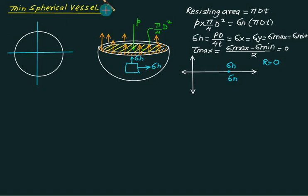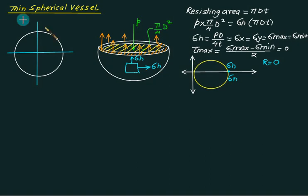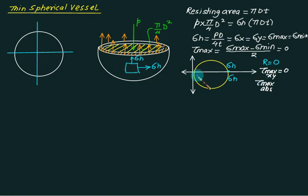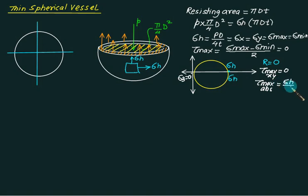If we draw the three Mohr's circles, one Mohr's circle is already drawn and the other two will overlap. The radius equals τ_max, so τ_max(x,y) = 0. But τ_max absolute equals this value minus this value, which gives σ_1 = σ_2, the same as σ_h / 2.